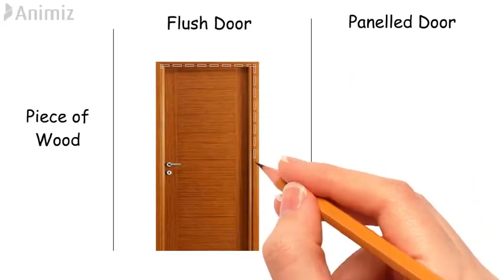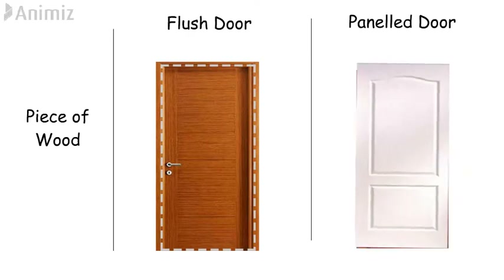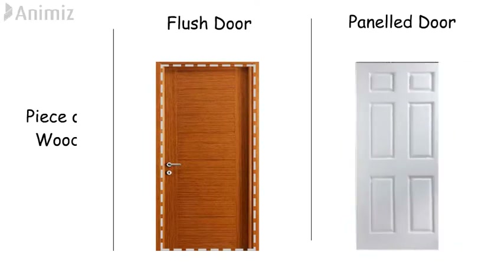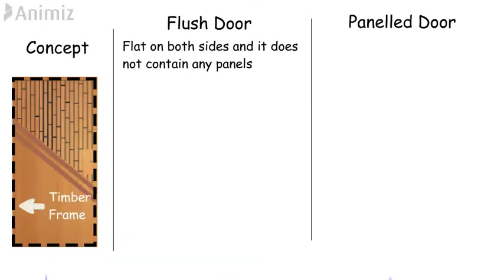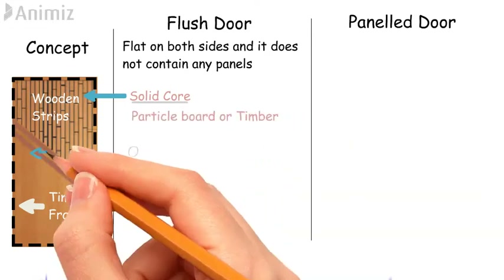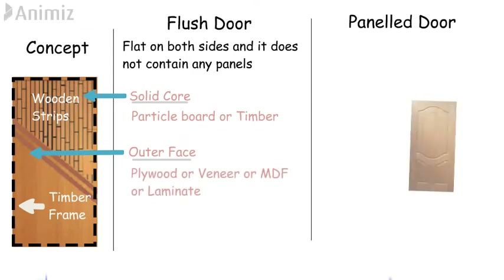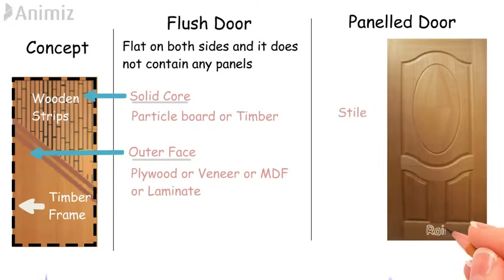Flush door is made up of a single solid piece of wood, whereas panel door comes in single panel, double panels, three panels, four panels, five panels, six panels, etc. Flush door is flat on both sides and does not contain any panels. It consists of a timber frame with solid wooden strips placed edge to edge as a solid core material — generally particle board or timber — and on the outer face, sheets of plywood, veneer, MDF or laminate can be used. Panel door consists of panels installed between the stiles and rails, which form the outer frame of the door. Stiles are vertical members of wood and rails are horizontal members of wood.